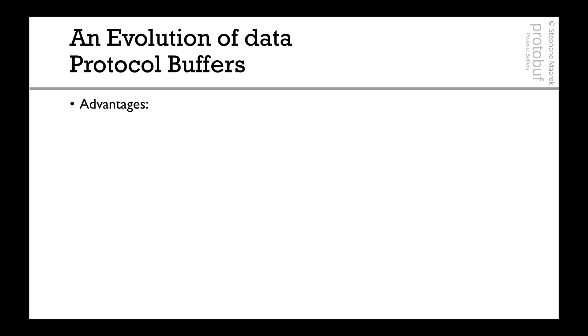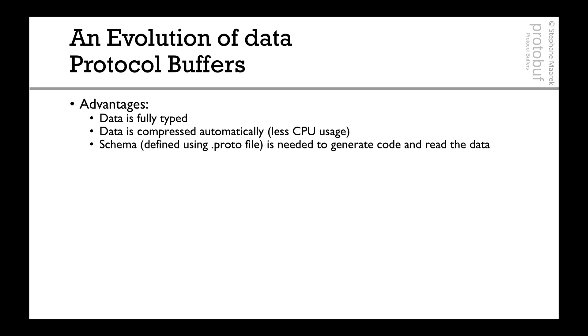Now, the advantages of protocol buffers are huge. And here are a few. The data is fully typed. Some things is integers. Some things is strings and so on. The data will be compressed automatically. So there will be less CPU usage when you read it. The schema defined using a proto file is needed to generate code and read the data. The documentation can be embedded in the schema or in the proto file. So that means that you can literally document every single field and why they're here.